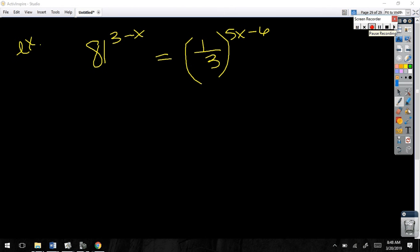Let's do one more of these. Let's do one more of these because this is where, this is the area that most will struggle. Let's do 81 to the 3 minus x equals 1 third 5x minus 6. Sure. Try this one. See what happens. All right. So what base did you use? 3.